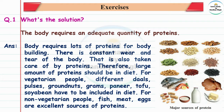Wear and tear is also taken care of by proteins. Therefore, a large amount of protein should be in the diet. For vegetarian people, different dals, pulses, ground nuts, grams, paneer, tofu, and soybean have to be included in the diet.